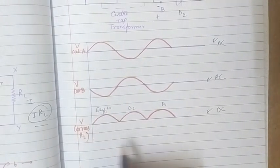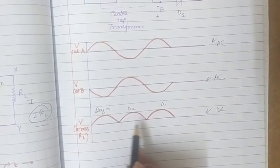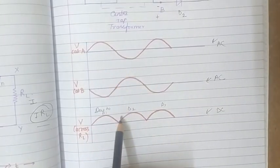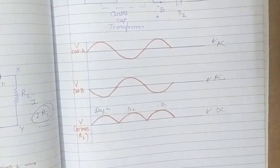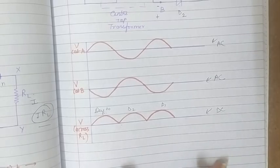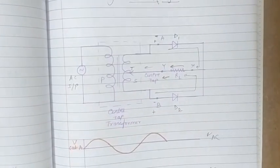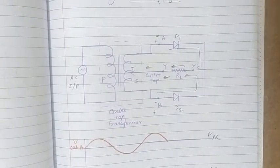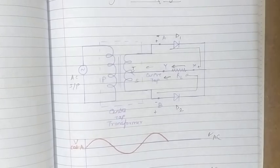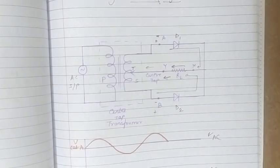Since it is a full wave rectifier, there is no gap - whether it is the positive half cycle or the negative half cycle, we are getting output. The full wave is being rectified, that's why we call this process full wave rectification and the rectifier used is called a full wave rectifier. So that's how we can use a junction diode as a rectifier, either half wave or full wave as per our requirement. Thank you for watching, stay tuned and keep studying.